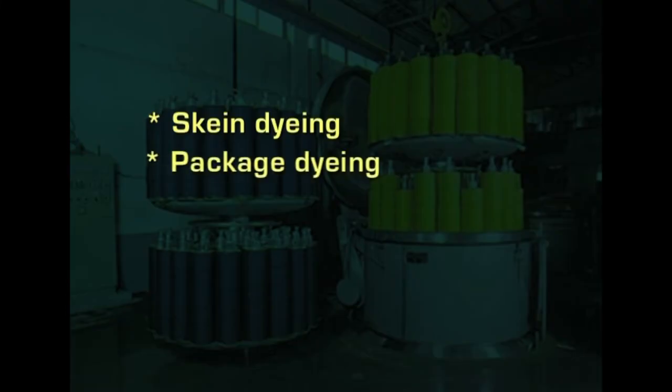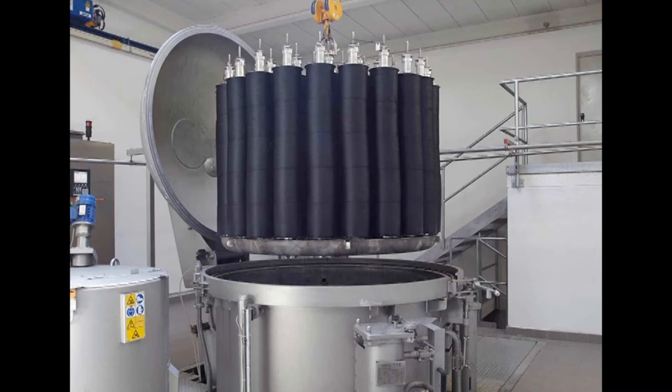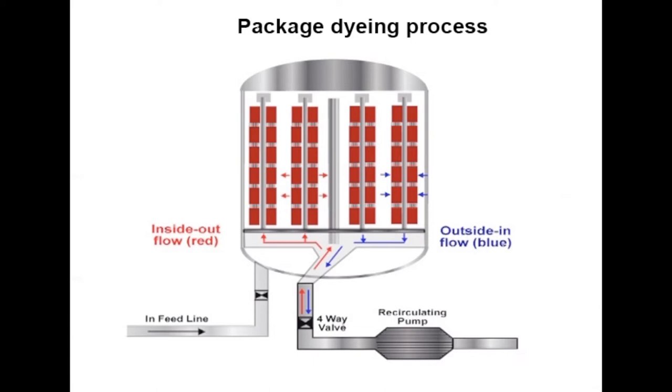The second variety is package dyeing, where the yarn is already wound onto spools and cones that have perforations. The yarn wound on these perforated spools is placed into machinery where dye passes through the main machinery through the perforations through the yarn, and then the flow reverses from outer to inner and inner to outer, creating very good dye penetration. The only problem is that yarn from package dyeing may not be as lofty as skein-dyed yarn. This yarn is mostly used for woven fabrics and to some extent knitted fabrics.